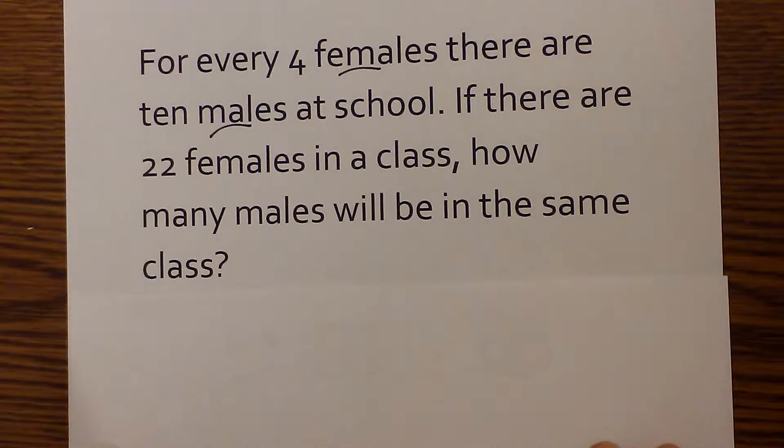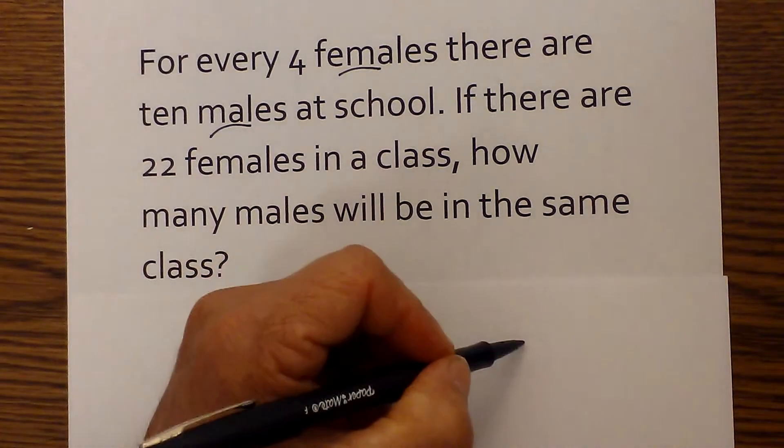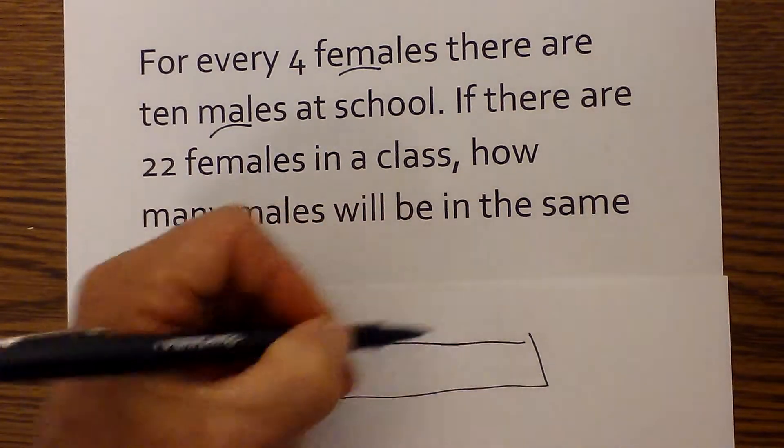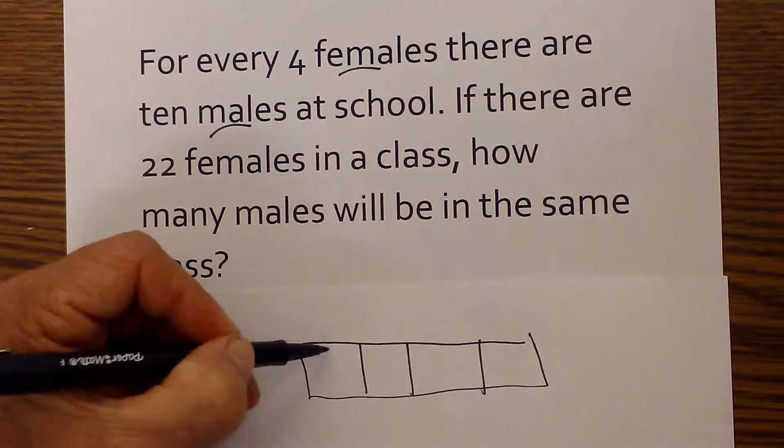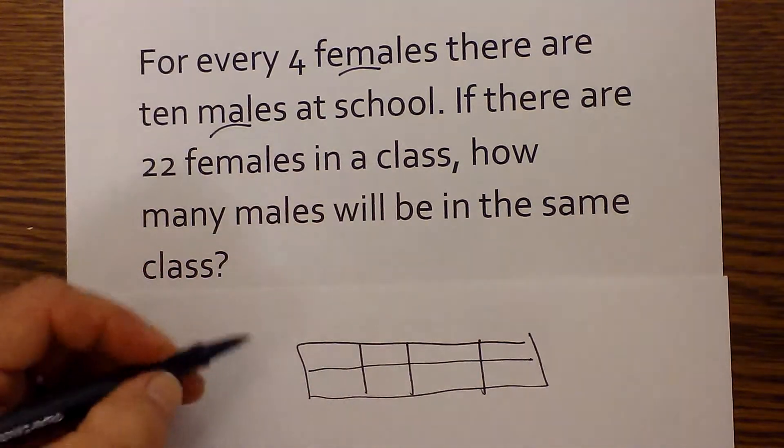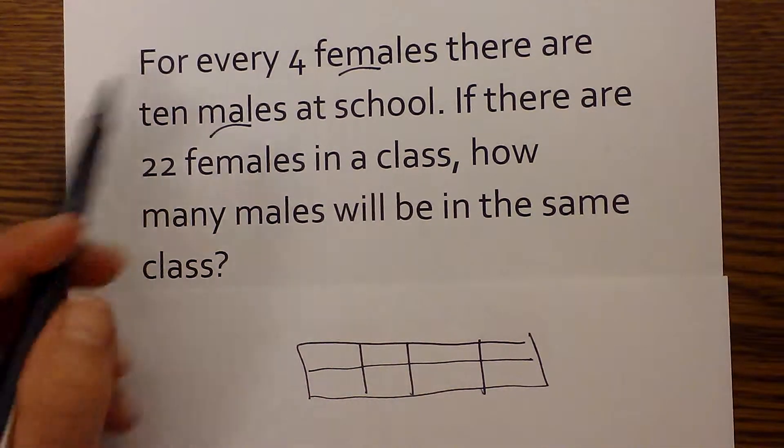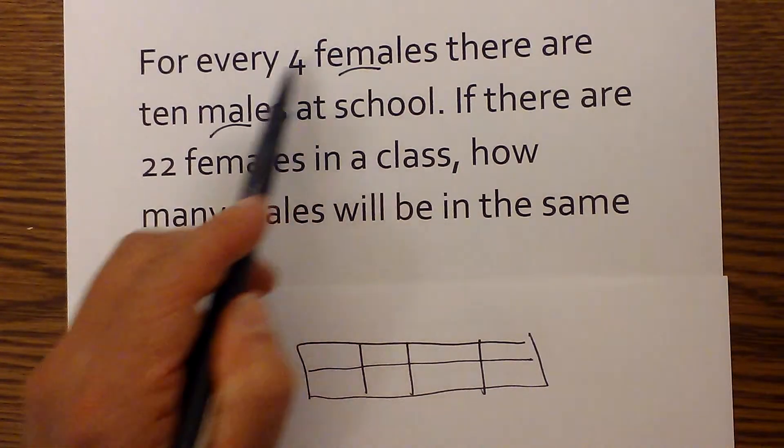For every 4 females, there are 10 males at school. If there are 22 females in a class, how many males will be in the same class? So I'm going to draw my box. Next, I need to see what information is given. And that is females and males.